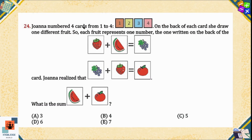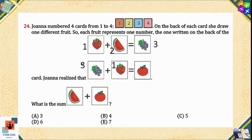Question 24: Joanna numbered four cards from one to four. On the back of each card she drew one different fruit, so each fruit represents a number. From the equations given: strawberry plus watermelon equals grapes. Let strawberry equal one and watermelon equal two, so grapes equals three. Then grapes plus strawberry equals three plus one equals four, which represents the apple. We need the sum of watermelon and apple: two plus four equals six. Option D is the correct answer.